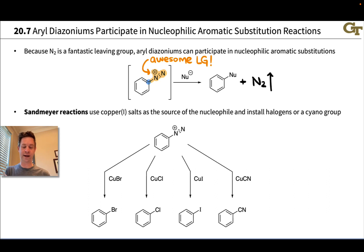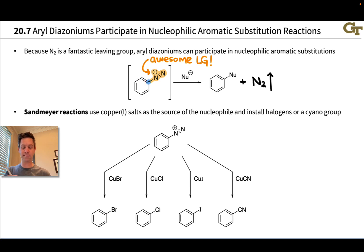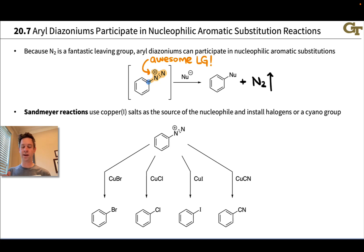In the presence of a nucleophile — represented generally as Nu⁻ — the nucleophile can add in, and after formation of a reactive intermediate, beta elimination kicks off N2. We end up with a new substituted benzene ring as the product.